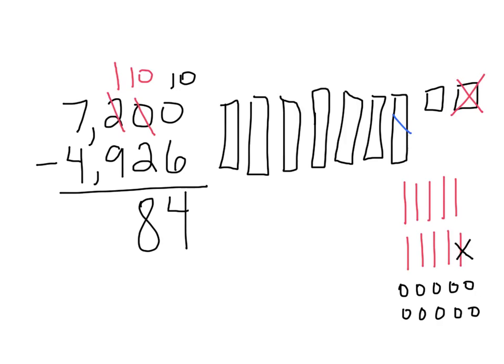So I'm going to ungroup 1,000, and that's going to give me 10 hundreds, because there are 10 hundreds in 1,000.